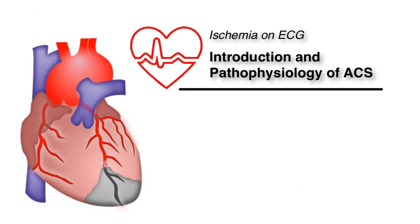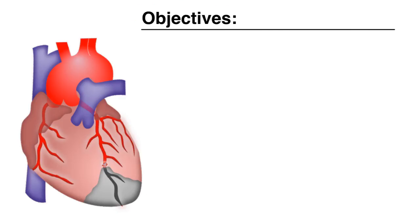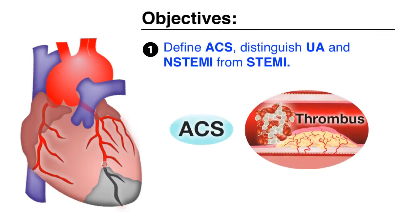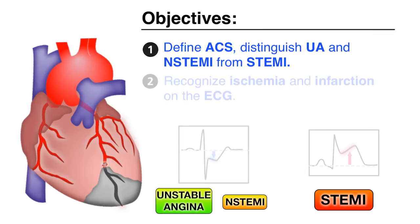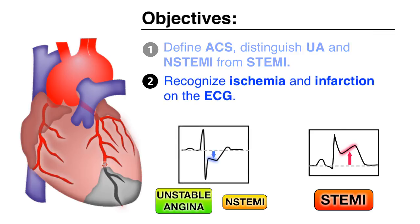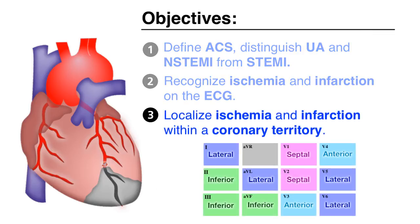We will be addressing in the next few videos ischemia and infarction on the electrocardiogram. The objectives of this section are: 1. Define acute coronary syndromes and distinguish unstable angina and non-ST elevation myocardial infarction from ST elevation myocardial infarction or STEMI. 2. Recognize ischemia and infarction on the EKG. 3. Localize ischemia and infarction within a coronary territory.